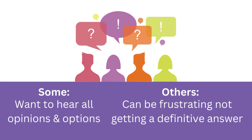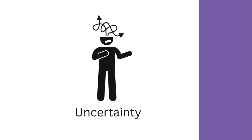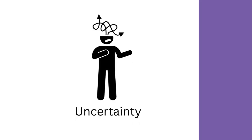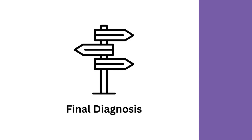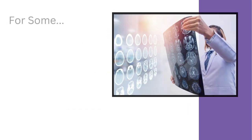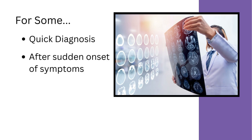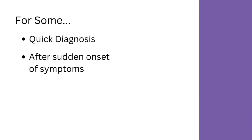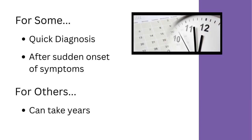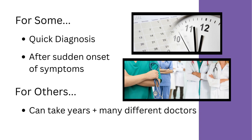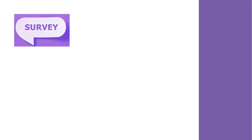Some people want to hear all the opinions and options, but for others, it can be frustrating when they don't get a definitive answer. Because of the ambiguities that come with Chiari, patients end up taking many different paths to a final diagnosis. For some people, diagnosis can come quickly after a sudden onset of symptoms, but for others, it can take years and many different doctors to finally get a diagnosis.